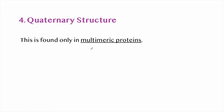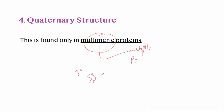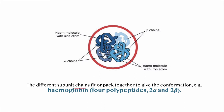The quaternary structure is found only in multimeric proteins — proteins having multiple polypeptide chains. Each polypeptide develops its own tertiary structure and functions as a subunit of the protein. The different subunit chains fit or pack together to give the overall conformation. For example, hemoglobin has four polypeptides: two alpha and two beta chains.